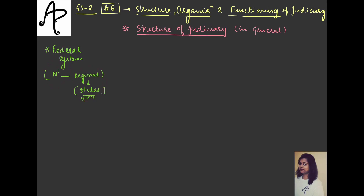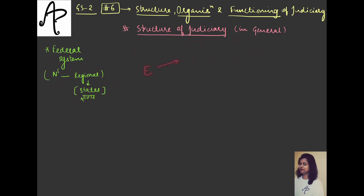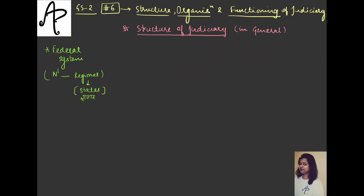Now, other federal countries — what kind of system do they have for the judiciary? Because we have done the legislature and the executive, you know that in the legislature we have Parliament with its houses, and we have the state legislature with the Legislative Assembly and Legislative Council — it existed at two levels. In the executive also, you have the President, the Union Council of Ministers including the PM; and at the state level, you have the Governor and the State Council of Ministers headed by the CM. So these exist at two different levels. But in other federal countries regarding judiciary, they also have courts at two different levels — a dual system of courts.